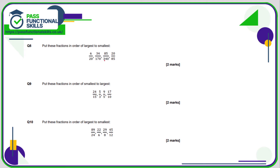Double 17 is 34, so 170 times 2 is 340 — we can convert 170ths into 340ths. And 85 is half of 170, and 170 is half of 340, so 85 times 4 is 340. Good news: we can convert them all into fractions out of 340. So we can leave that one alone. 34 out of 170 is the same as 68 out of 340 — just doubling the top and the bottom.